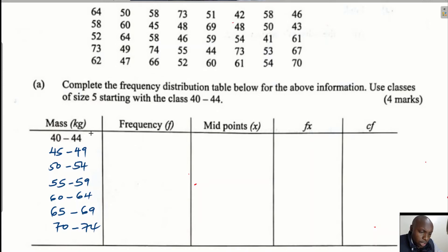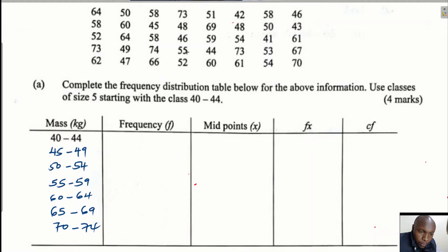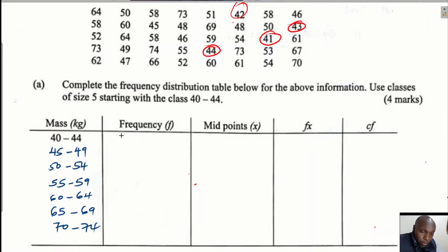Let's count all the masses that are between 40 and 44. Going through the data, I can identify: one here, one here, one here, and one here — so there are four values in the class 40 to 44.